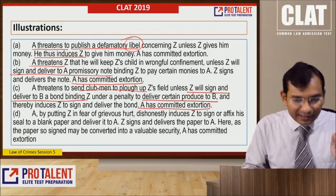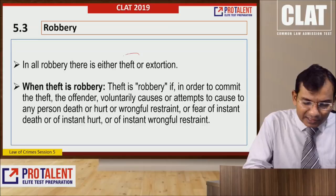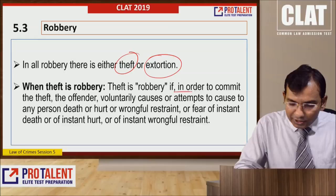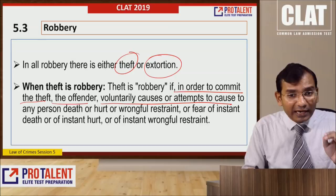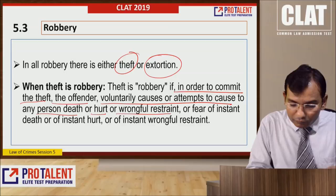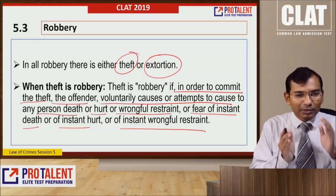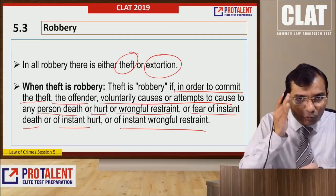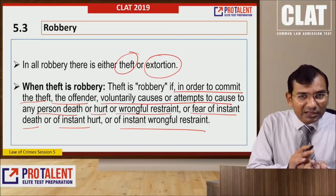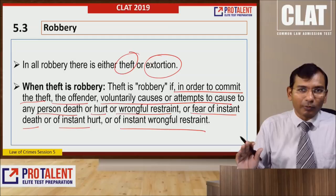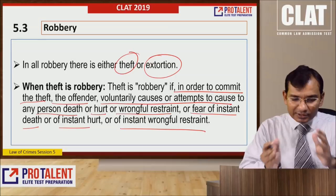Now, another crime called robbery. In robbery there is either theft or extortion. Theft becomes robbery if, in order to commit the theft, the offender voluntarily causes or attempts to cause to any person death, hurt, wrongful restraint, or fear of instant death, instant hurt, or instant wrongful restraint. Robbery means during theft some physical force is used, wrongful restraint is caused, hurt is caused, or fear of instant death is created. Robbery must always have some force in it. Illustration: A holds Z down and fraudulently takes Z's money and jewels from Z's clothes without Z's consent. A has committed theft and, in order to commit that theft, has voluntarily caused wrongful restraint to Z — therefore A has committed robbery.